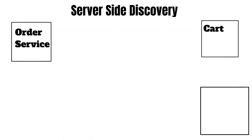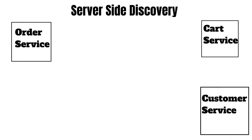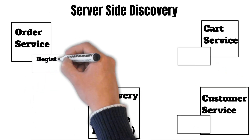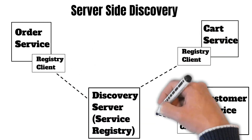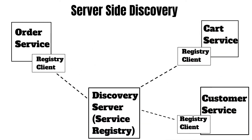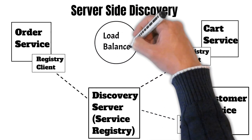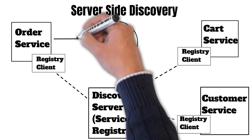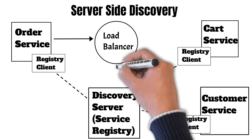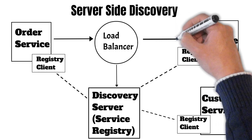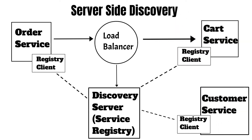Now let's talk about server-side discovery. We'll take the same example with the order service, card service, and customer service. We have our discovery server as well, and all these services have their registry client, which registers them with the discovery server. If the order service wants to call the card service, we have a server-side load balancer in between. The request first goes to the load balancer, which then queries the discovery server to find out the IP address of the card service, and then the request is directed to the card service.